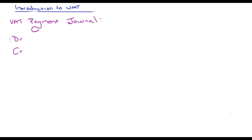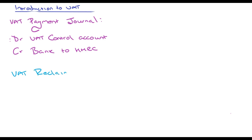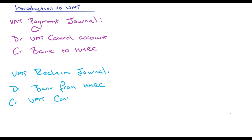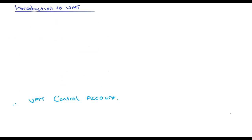For the VAT payment journal, debit the VAT control account and credit the bank, since we're making a payment to HMRC and wiping out the balance in the VAT control account. If we're making a VAT reclaim, the journal is different: debit the bank because we're receiving money from HMRC, and credit the VAT control account to wipe out any remaining balance.